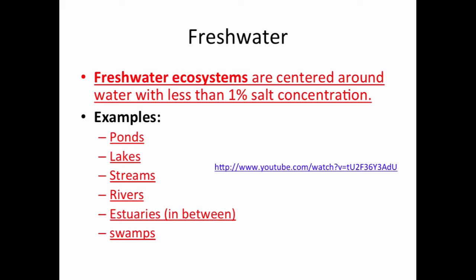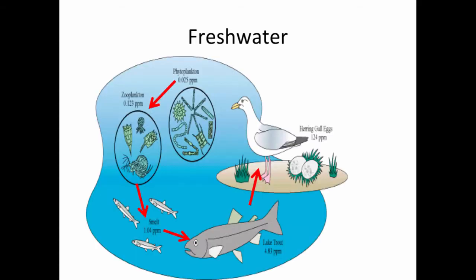You're probably wondering what an estuary is. An estuary is pretty much the mix of fresh and salt water. Wherever a river dumps into the ocean, that area where the water mixes is called an estuary, but it still needs to be in that less than 1% range.